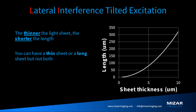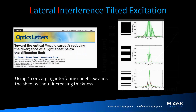The one caveat with the cylindrical lens-based system is that the thinner you make the sheet, the shorter the length of the sheet will be — you can have either a thin sheet or a long sheet, but not both. Looking at the graph, if you wanted a sheet about two and a half to three microns thick, it's only going to be about 20 to 25 microns long, which is not useful for most applications. If you want a 250 to 300 micron long sheet covering most standard objective fields, it's going to be close to 10 microns thick — again, not very practical.